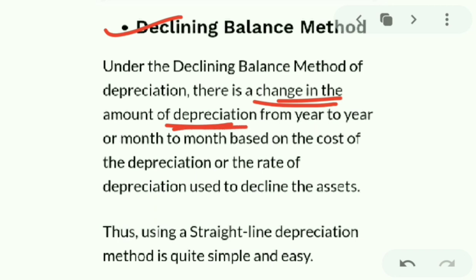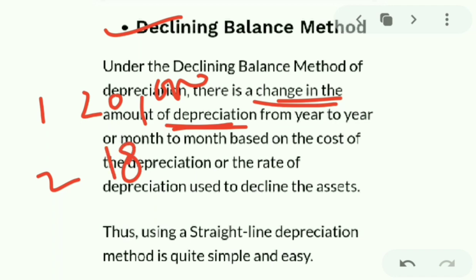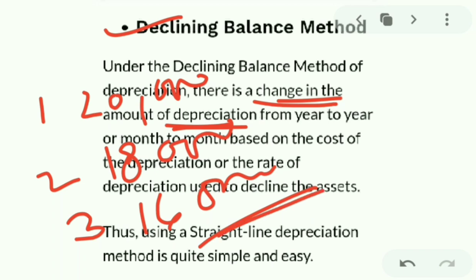Under the Diminishing Value Method, the depreciation amount keeps changing each year. For example, in the first year it may be 20,000, in the second year it will be 18,000, and in the third year it could be 16,000. The amount of depreciation keeps on decreasing each year.